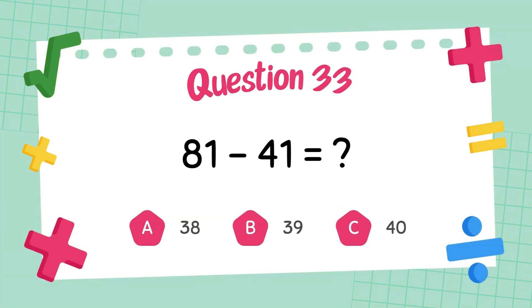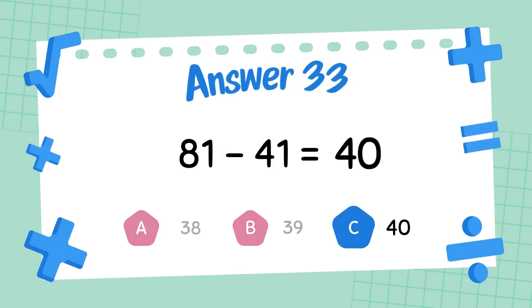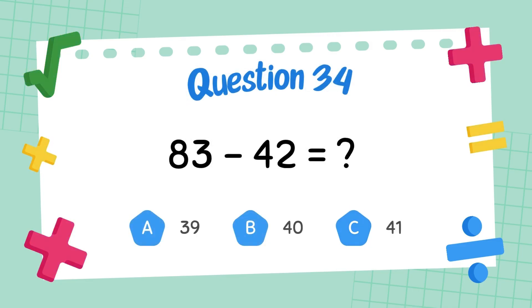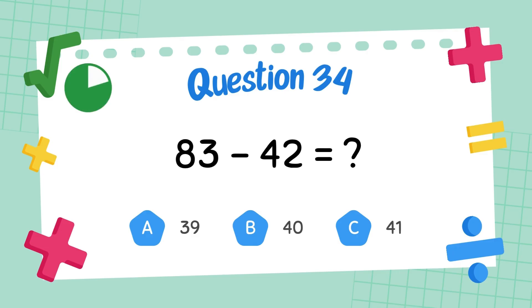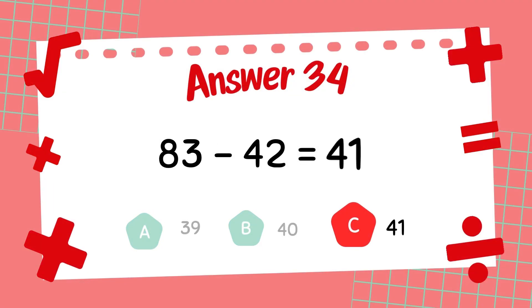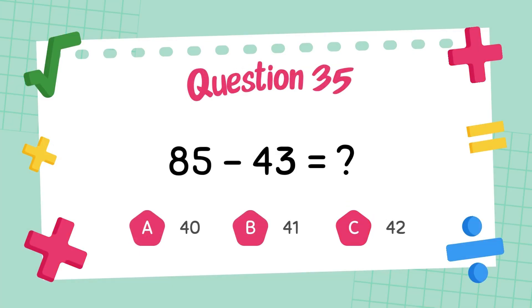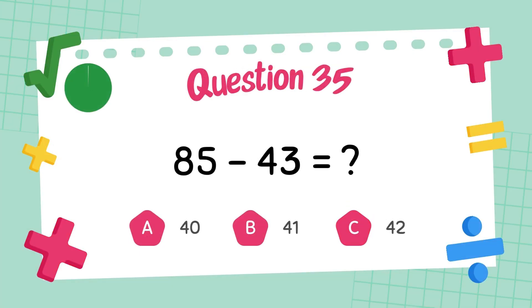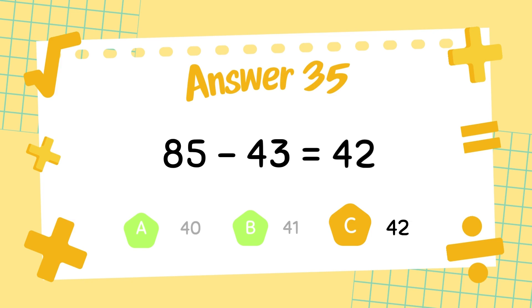What is 81 minus 41? The answer is 40. What is 83 minus 42? The answer is 41. What is 85 minus 43? The answer is 42.